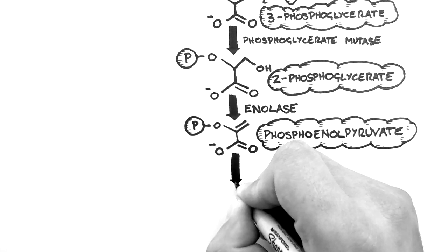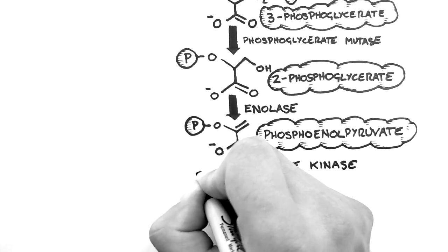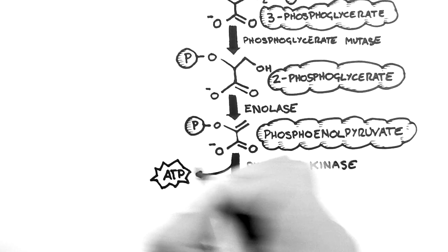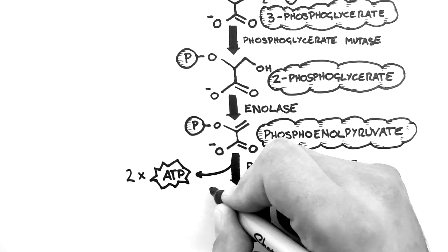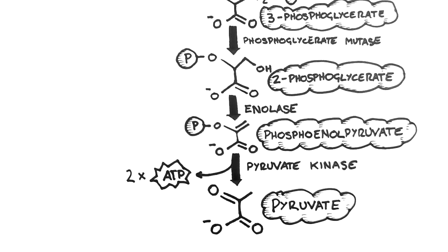The final enzyme of glycolysis is pyruvate kinase. This kinase is also going to remove phosphate groups from the molecule, attach them to an ADP and create ATP. Again, two of these are created because two phosphoenolpyruvates will be created for every glucose molecule. This finally leaves us with pyruvate which will be the substrate for the TCA cycle.